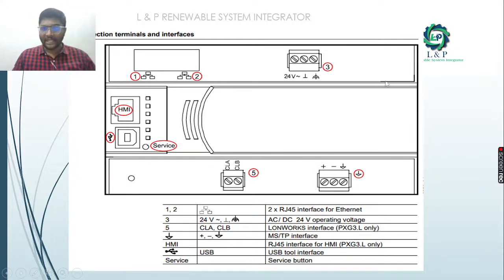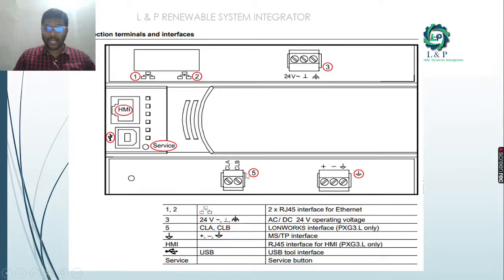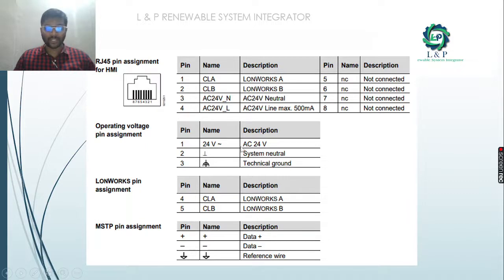Looking at the connection terminals: the power terminal takes 24V AC. There are two RJ45 jacks for Ethernet connections, a terminal for the MSTP interface, and a terminal for the LAN interface. To reset the router to factory settings, press the service button. The HMI port and the LAN interface are available only on the PXG3L model. Both models have MSTP and normal Ethernet RJ45 pin assignments.